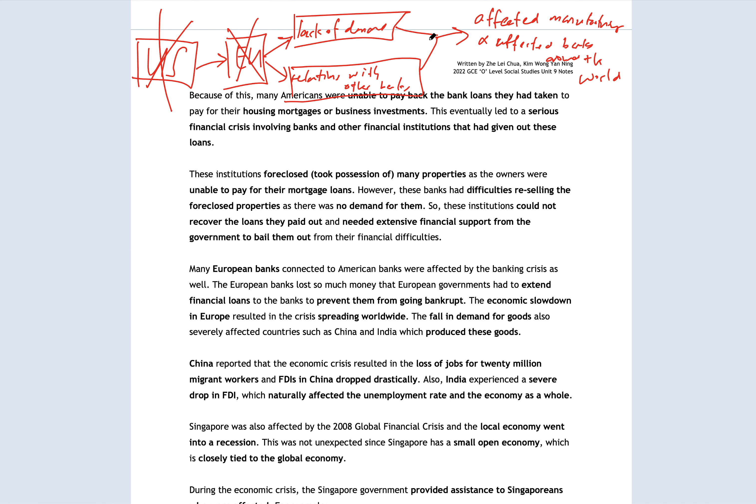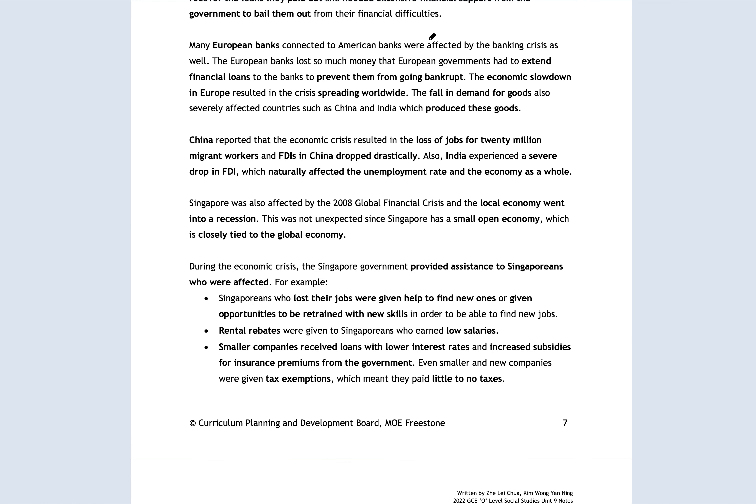In China, around 20 million people lost their jobs and nobody was investing in China at that point. In India, the same — a severe drop in FDIs, unemployment rate spiked, and the economy started to collapse. Singapore also went into a recession, with no choice, because our domestic economy is so small and we have to be connected to the global economy no matter what. As a result, we were also affected by the 2008 financial crisis.